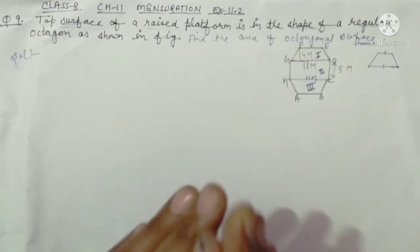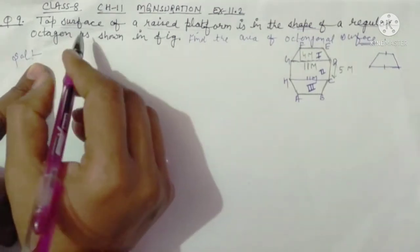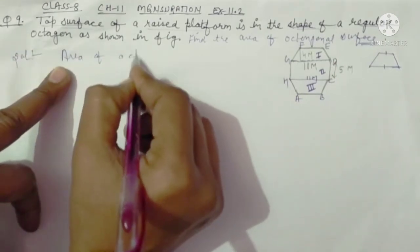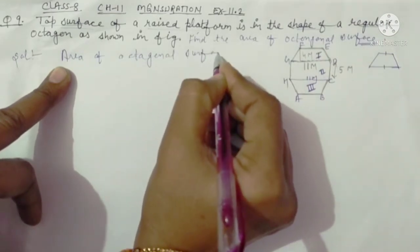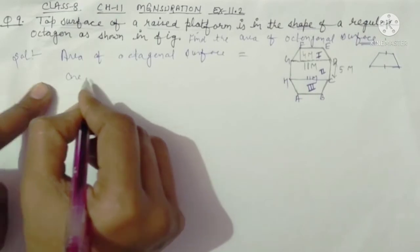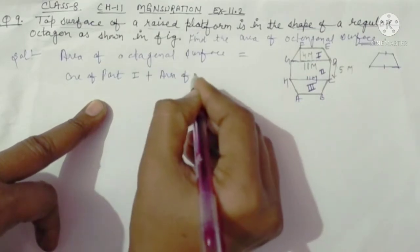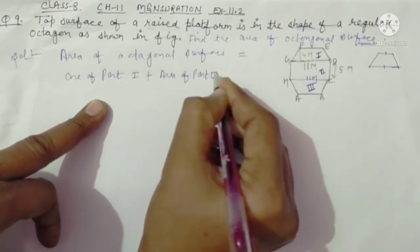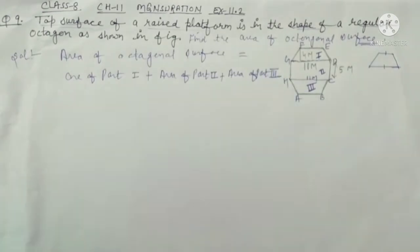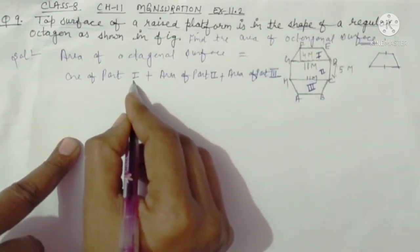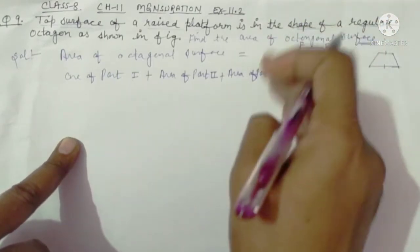Area of octagonal surface is equal to area of part first plus area of part second plus area of part third. Three parts area: first part, second part, third area. Total octagonal shape area.